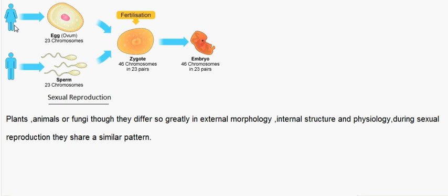Here you can see the male and the female individuals. The female produces the egg and the male produces the male gamete which is the sperm. They fuse together to form the zygote, and the zygote then develops to form the embryo.